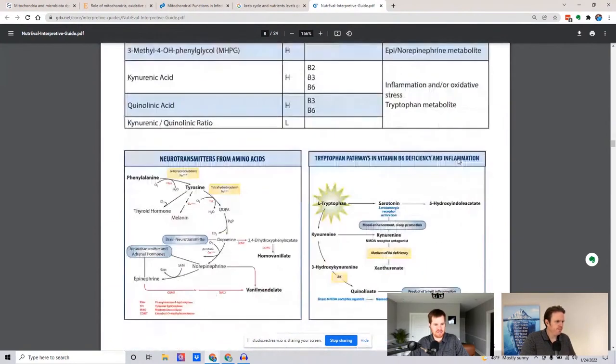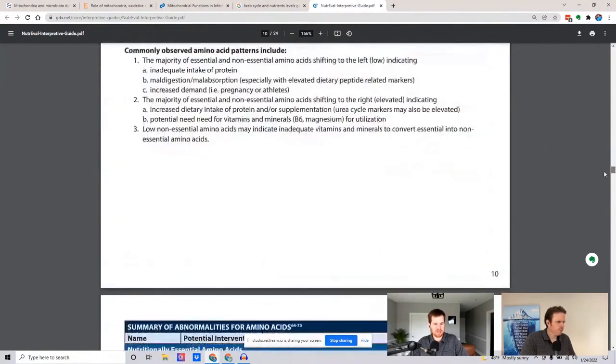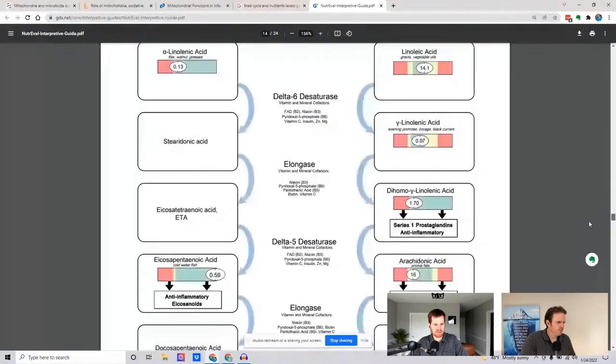Ribose is amazing. Carnitine is amazing. Acetyl L-carnitine is amazing. Also, let's go up a little bit. I like that picture. There was a neurotransmitter picture there that you had.